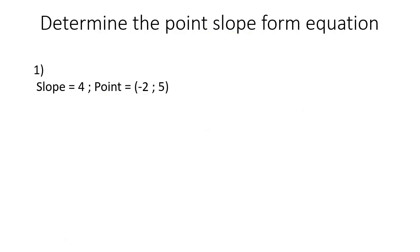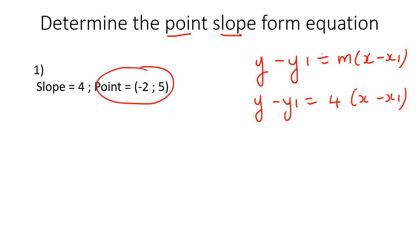So here's our first example. It says determine the point-slope-form equation, so it's quite easy. You go y minus y1 equals m times x minus x1. So we need to work out the slope. Oh, but they gave us that. That's so nice and easy. So we'll just go fill that in as 4.